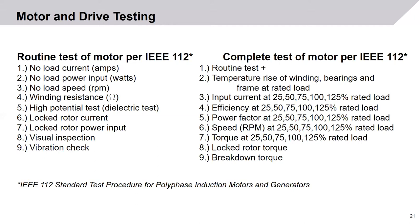The complete test also measures current efficiency, power factor, speed, and torque at 25, 50, 75, 100, and 125% of rated motor load. On top of all those values, they will still check lock rotor torque and breakdown torque.